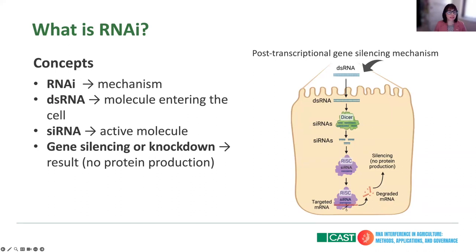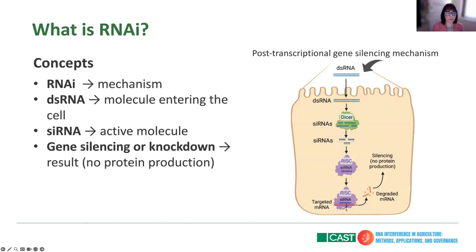It's important to clarify some concepts that can be really confusing. RNA interference is the mechanism. Double-stranded RNA is the molecule that enters the cell or that we deliver. siRNA — small interfering RNAs — is the active molecule that helps silence that messenger RNA. Gene silencing or knockdown is the result: the degradation of that messenger RNA such that there is no protein production.